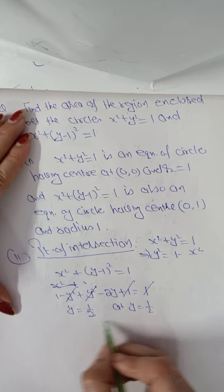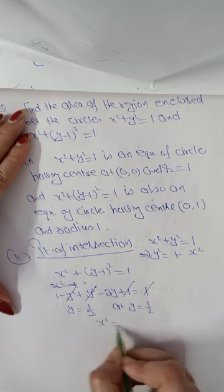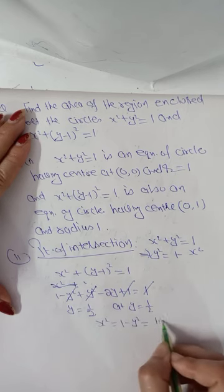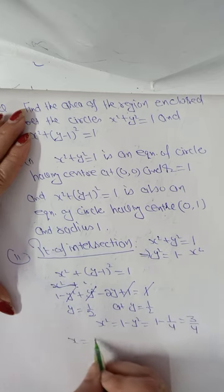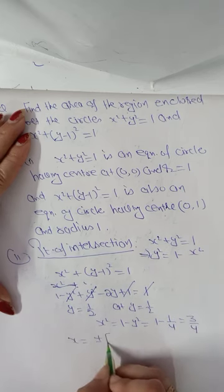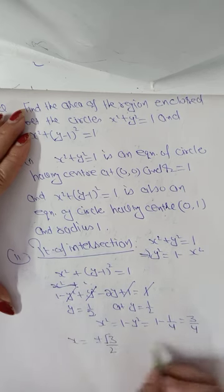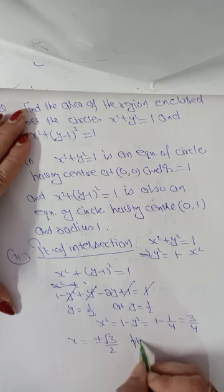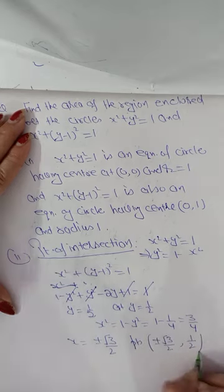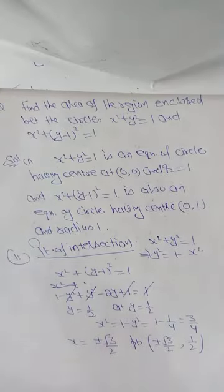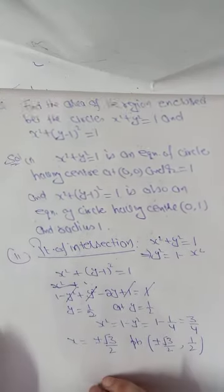At y = 1/2, x² = 1 - y² = 1 - 1/4 = 3/4, so x = ±√3/2. Therefore, the two points of intersection are (√3/2, 1/2) and (-√3/2, 1/2). Now we proceed to curve sketching.